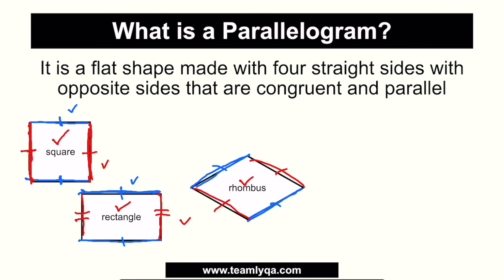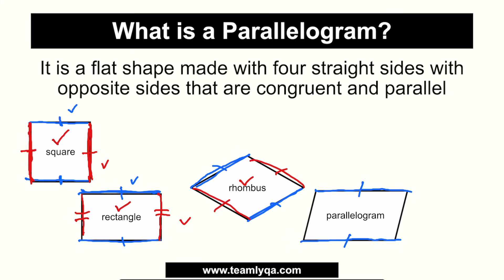So again, maraming mga klase ng shapes na can be defined as parallelograms. This right here is what we usually see — ito yung classic na parallelogram. Basically, it's like a rectangle pero nakatilt yung dalawang sides. Itong side na ito ay kapareho ng measurement ng side na ito, and of course, they're made up of lines na parallel dun sa opposite niya. So a square is also a parallelogram. A rectangle is also a parallelogram. A rhombus is also a parallelogram.